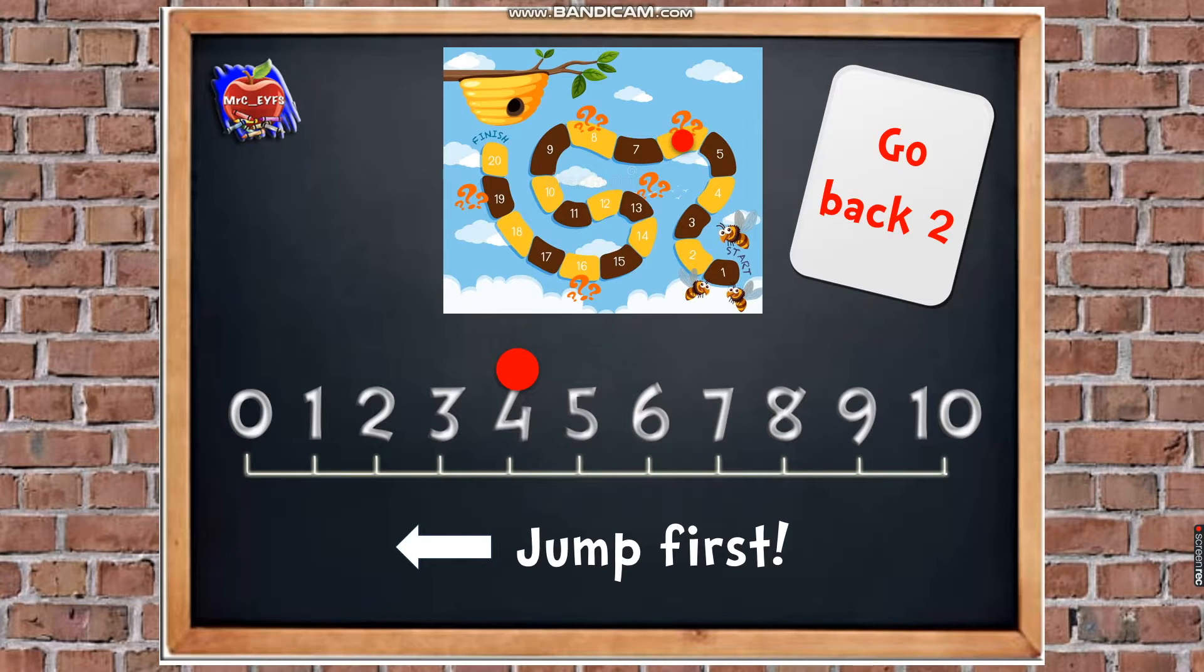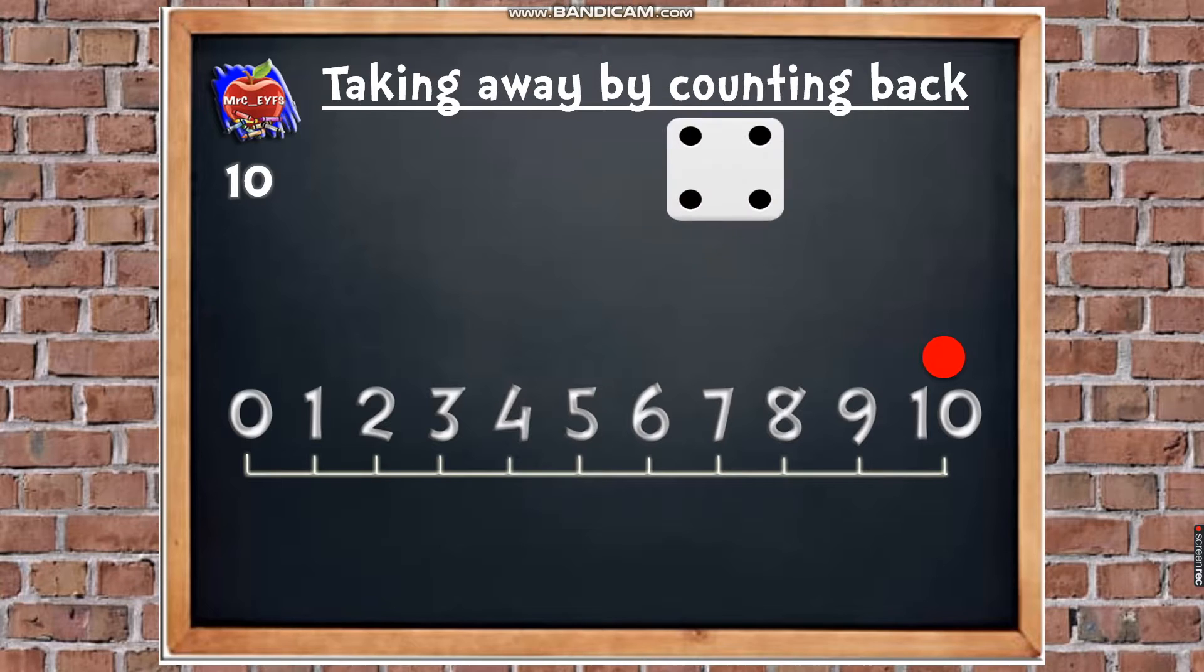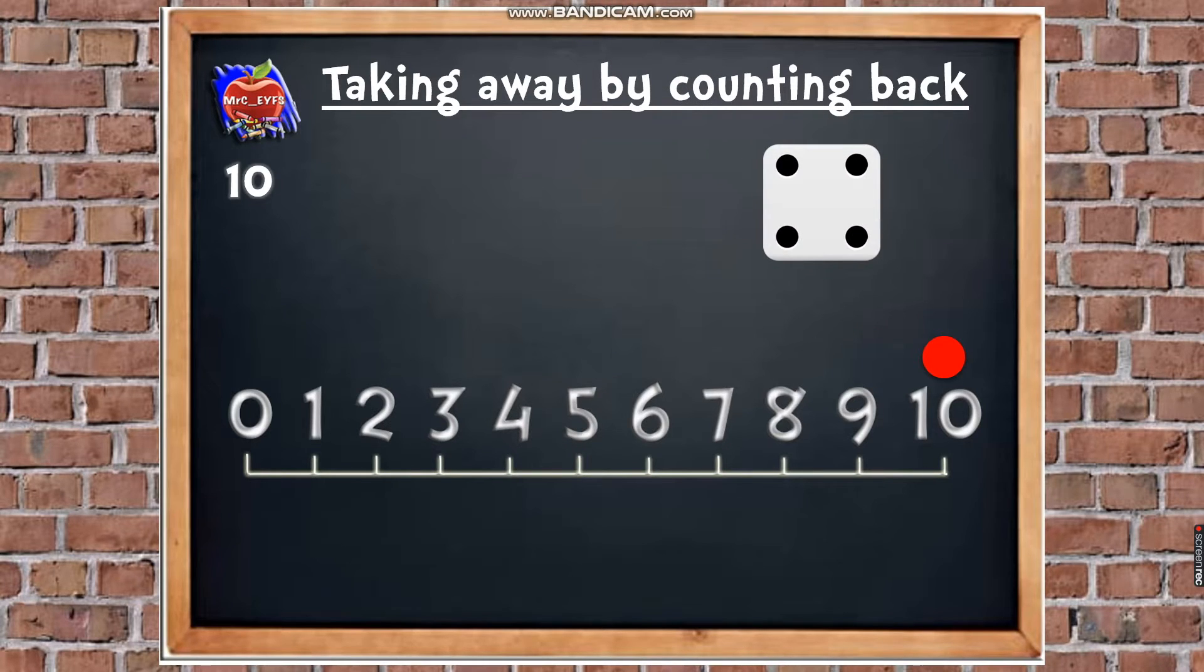That's a good start, because it's going to help us now when we're taking away by counting back. So I'm going to be taking away from numbers from 10. So my counter is going to start on 10. So I'm going to put 10 up on the board. So there we go. That's going to be the beginning of our number sentence. And I'm going to roll my dice. So let's roll the dice.